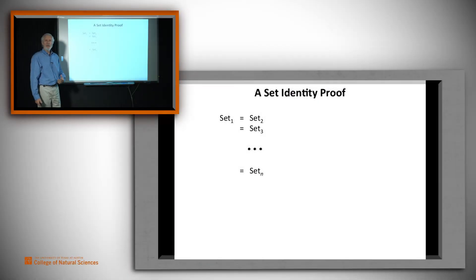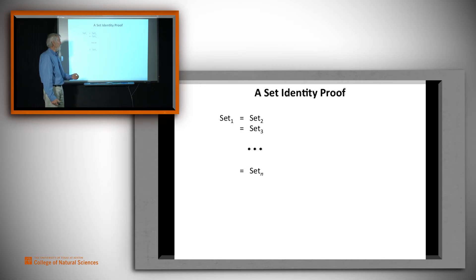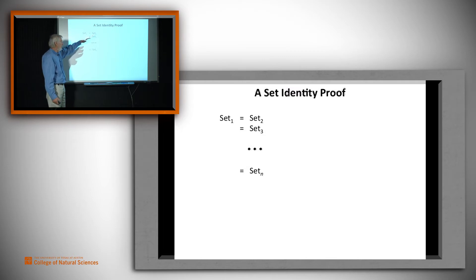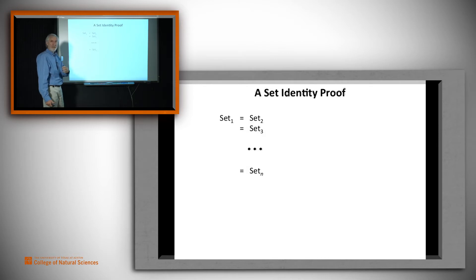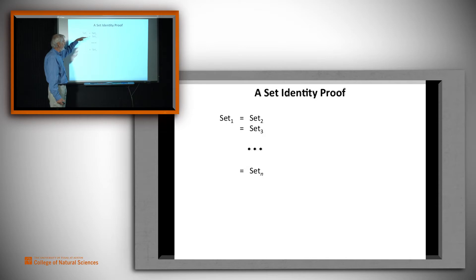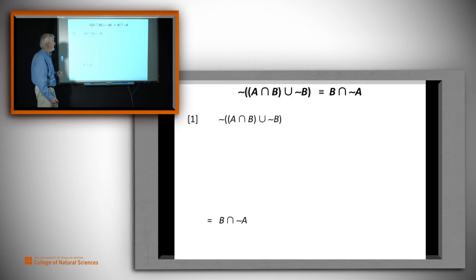In this video I want to show you a form of proving two sets are equal. In this version, what we do is go through a chain of equal sets. We have a set on the left hand side equal to a set on the right hand side that we're trying to prove, and we link those through a chain of identical sets using so-called set identities.